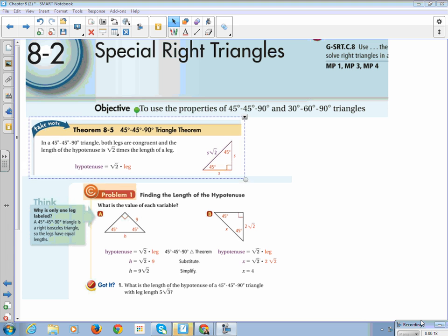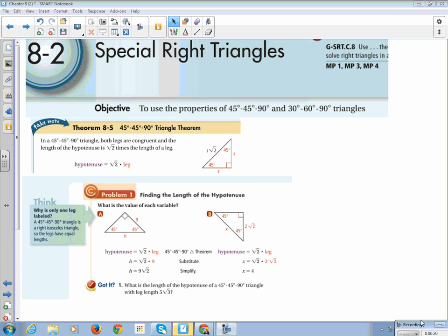One of the theorems that we are encountering in this section is the 45-45-90 triangle theorem. What it tells us is that our hypotenuse is equal to the square root of 2 times the leg. So whatever the value of one side of your triangle is, the hypotenuse is going to be the square root of 2 times that.